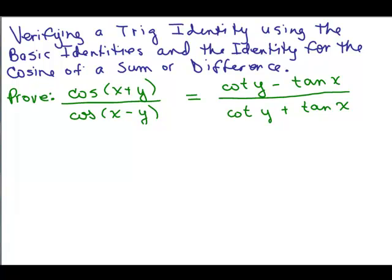Alright, we're going to verify a trig identity using the basic identities and the identity for the cosine of a sum or difference. So here's our problem. Cosine of X plus Y over cosine of X minus Y is equal to cotangent of Y minus tangent of X over cotangent of Y plus tangent of X.